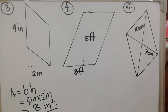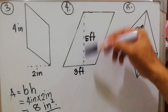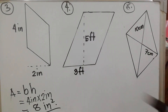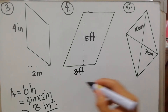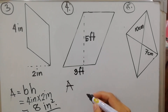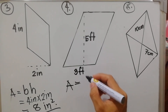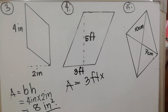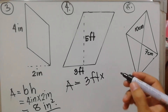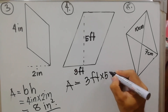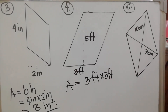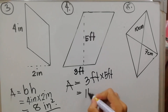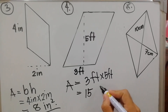For item number four: height is five feet and base is three feet. Area = base × height = 3 × 5 = 15 square feet.